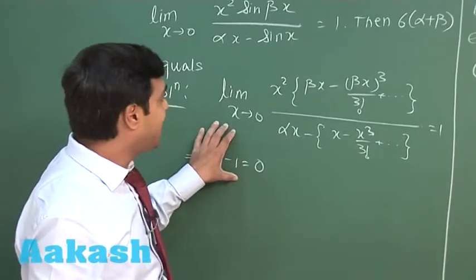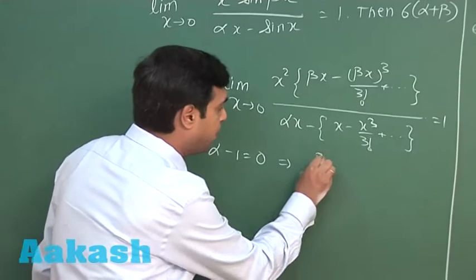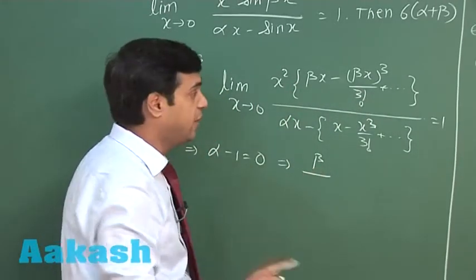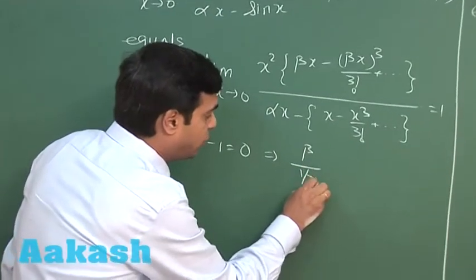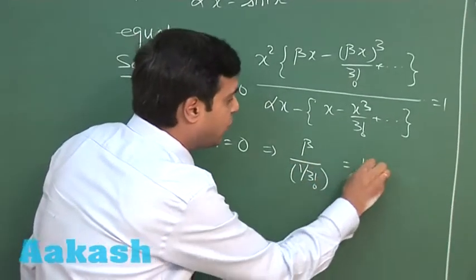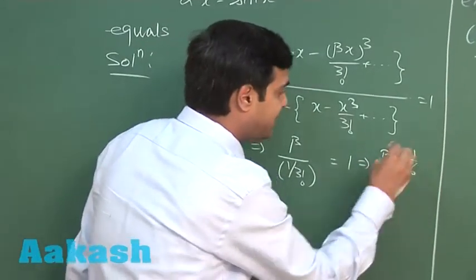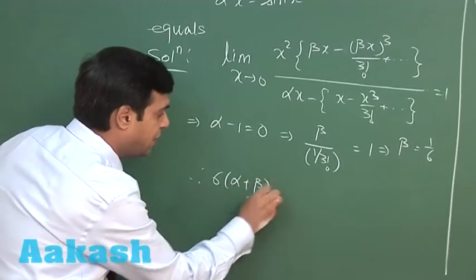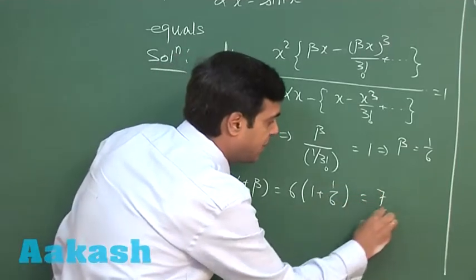When alpha is substituted as 1, we can see the limiting value is obtained as beta taking x cube common and cancelling numerator and denominator divided by 1 by factorial 3 is equal to 1. This gives me beta equals 1 by 6. Therefore, 6 times alpha plus beta, that is 6 times 1 plus 1 by 6 or simply 7.